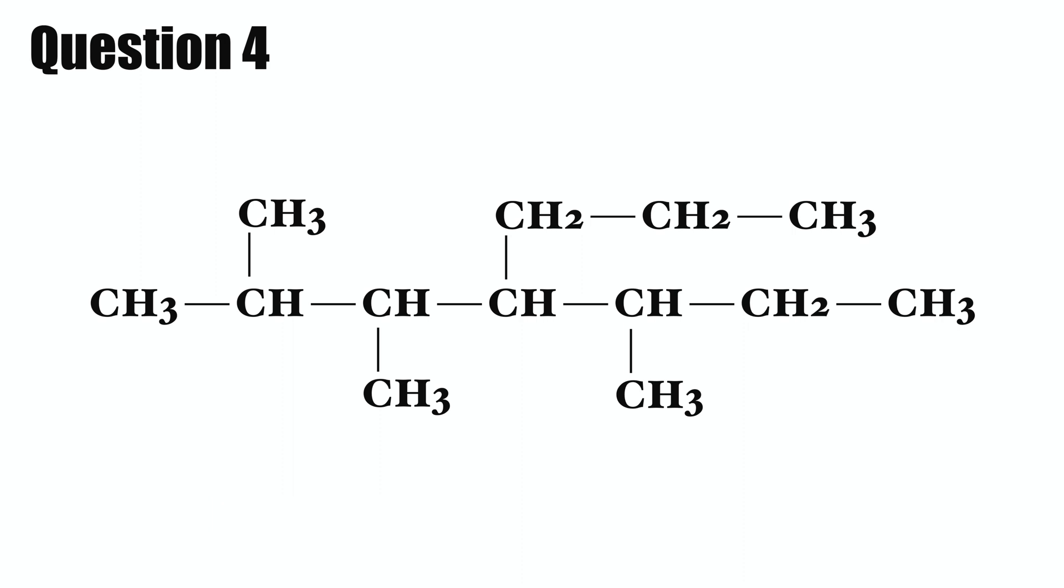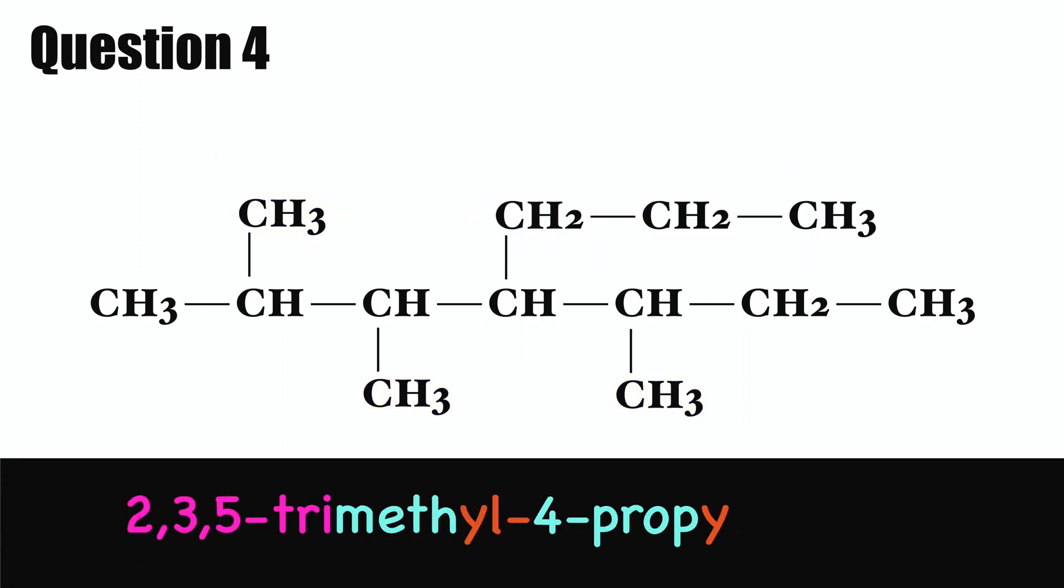Question four. This is a tricky one. The parent chain has seven carbons. And there are three methyl substituents on carbon number two, three, and five. Also, there is one propyl substituent on carbon number four. This compound is 2,3,5-trimethyl-4-propylheptane.